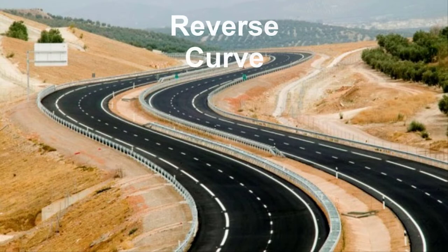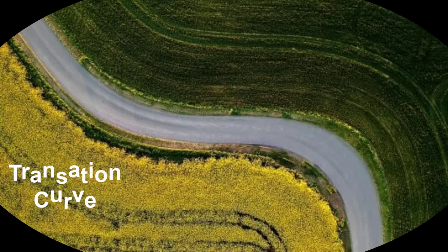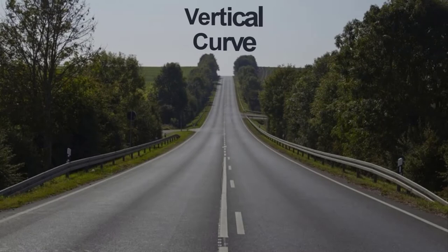A reverse curve is formed when two simple circular curves bending in opposite directions meet at a point. A curve of variable radius is termed as a transition curve.